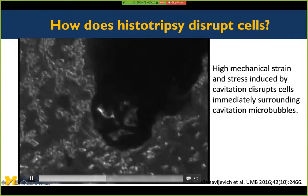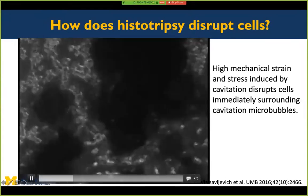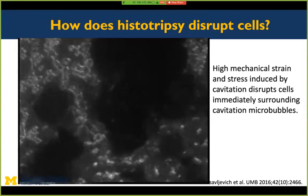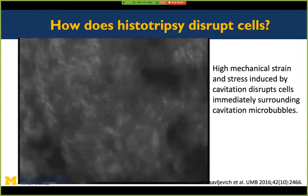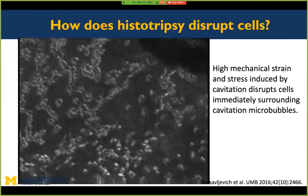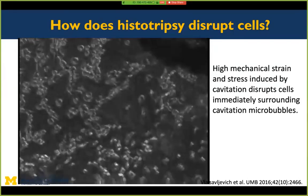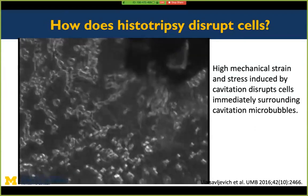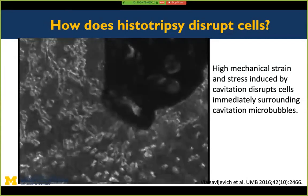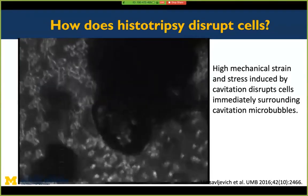Microsecond-length pulses allow reliable cavitation generation. The bubble expansion-collapse process takes several hundred microseconds, then residual bubbles dissolve. If the pulse length is extended to milliseconds, bubble activity becomes chaotic and less controllable. The low duty cycle in histotripsy serves two purposes: reducing heating, and providing sufficient time between pulses for residual bubble fragments to dissolve so they don't impact cavitation generated by the next pulse.